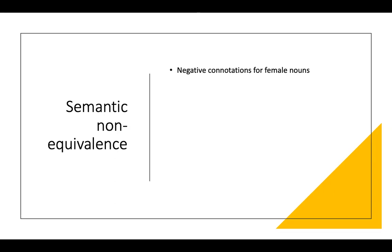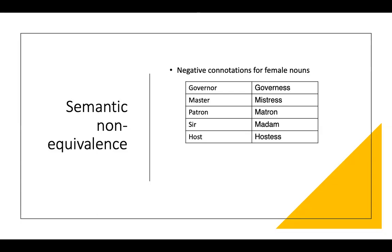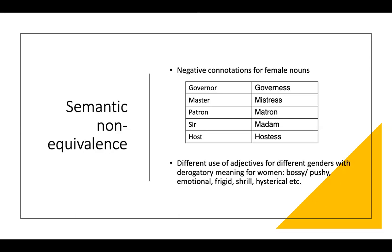We also find something called semantic non-equivalence in our language. That means that for some nouns there is a female and a male form, but there is always a negative connotation for the female noun only — for example, governor/governess, master/mistress, host/hostess. We can find the same difference with adjectives: some adjectives have a more derogatory meaning when used for women but not for men, such as bossy, pushy, emotional, frigid, hysterical, etc.